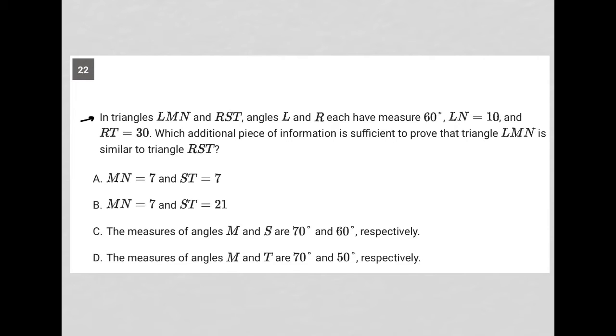So this question says, in triangles LMN and RST, angles L and R each have measure 60 degrees, LN equals 10, and RT equals 30.